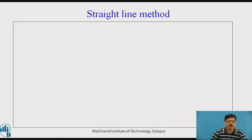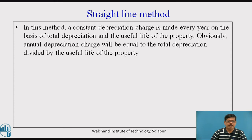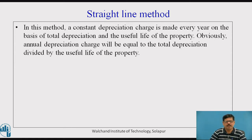In this video session, we are going to study the first two methods, that is the straight line method and the diminishing value method. In the straight line method, a constant depreciation charge is made every year on the basis of total depreciation and the useful life of the equipment or property.